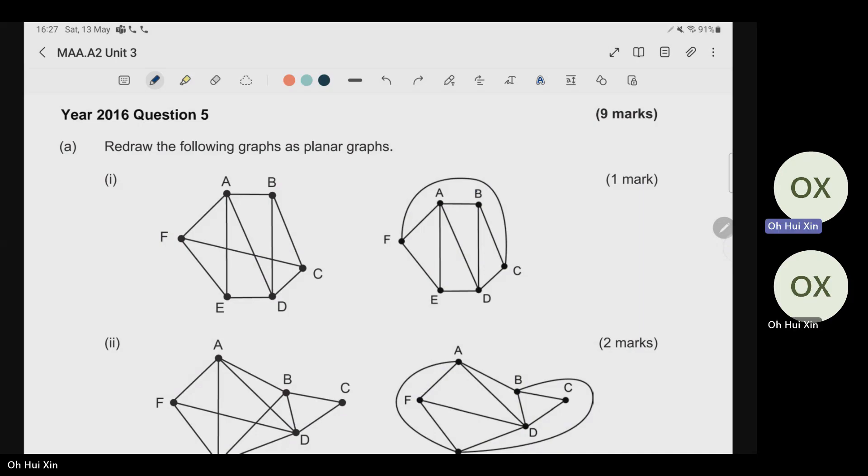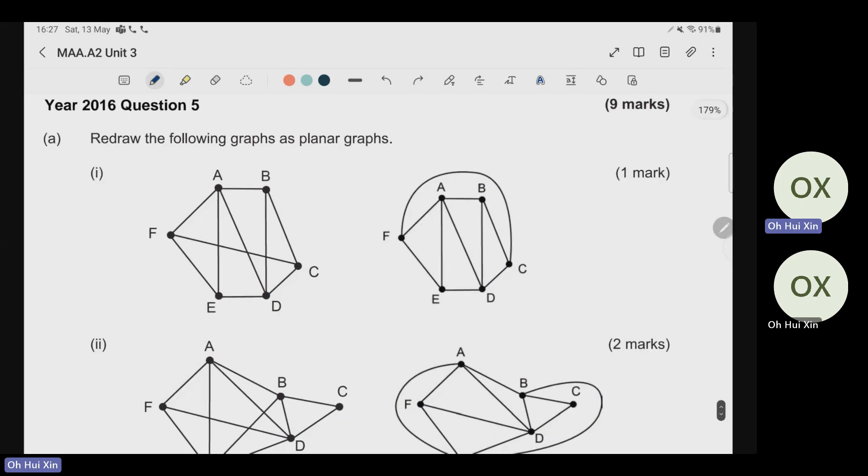Let's start from question five from the year 2016. For part A, you are required to redraw the graph so that it's shown as a planar graph, meaning no edges are supposed to be crossed over each other.